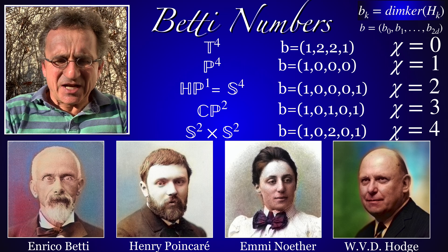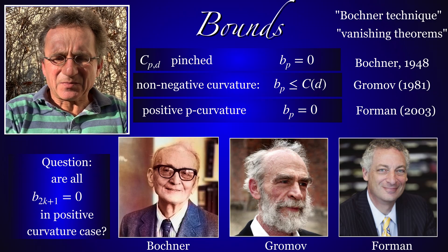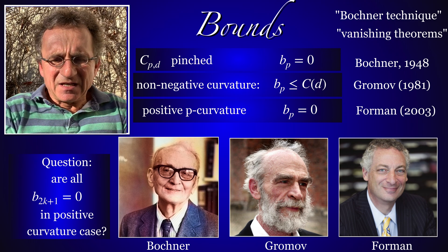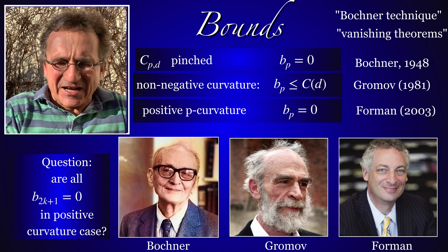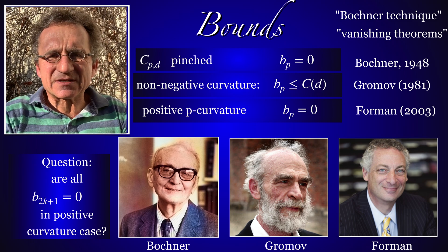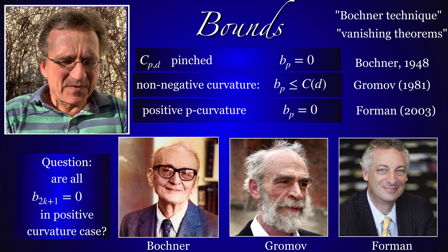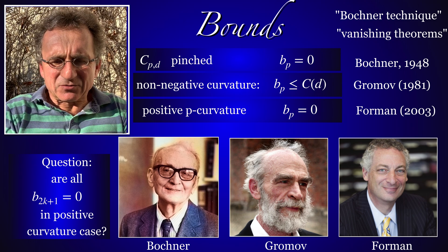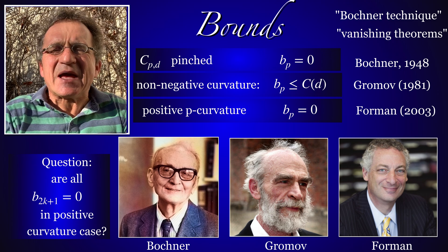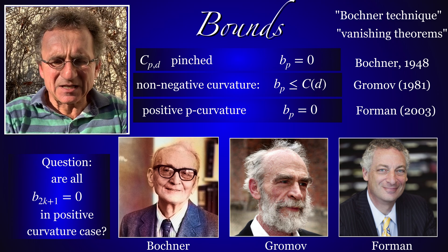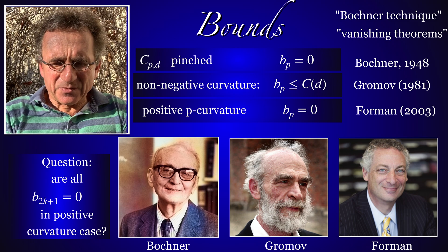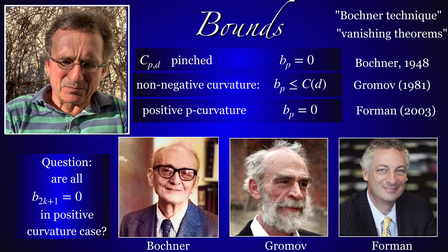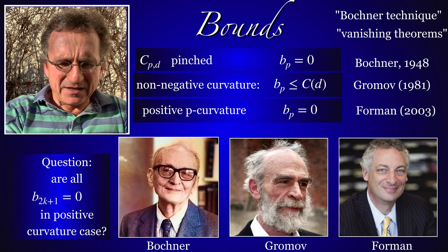There are some general results, like proofs of positive Euler characteristic through showing the vanishing of some Betti numbers — especially the odd ones. Bochner developed some techniques using Hodge theory in this direction. There is a general bound by Gromov, a universal dimension-dependent bound on the Betti numbers for a positive curvature manifold. Some of these ideas have been ported to the discrete.